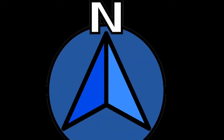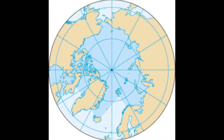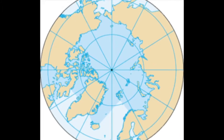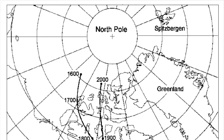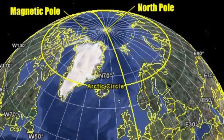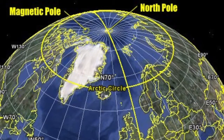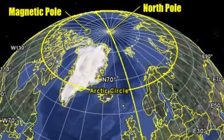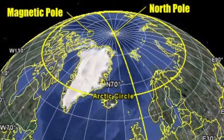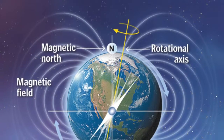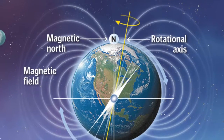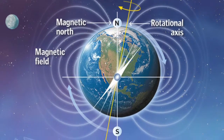Firstly, talking about different types of north. There is true north, where lines of longitude meet at the needle point. There's grid north, which is the direction in which the north-south grid lines are drawn on the topographic map. Grid lines are always parallel to each other. And there's also magnetic north, the direction where the north point of a compass needle points.